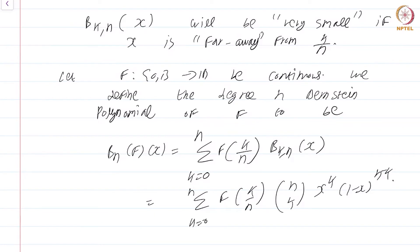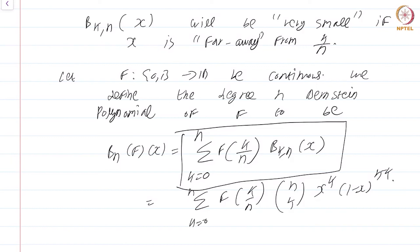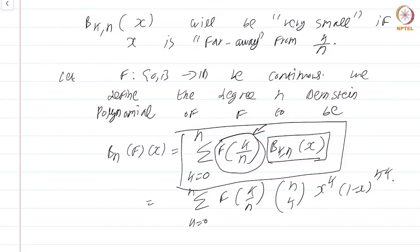What does our probabilistic intuition tell us? For any value x, as n increases, each f(k/n) is weighted by b_{k,n}(x). When x is very close to k/n, b_{k,n}(x) is close to 1 and the value f(k/n) dominates. For those k/n's far away from x, b_{k,n}(x) is near 0 and contributes nothing. So essentially we recover the sampled value of f near x. This is all vague, but we will make it precise.